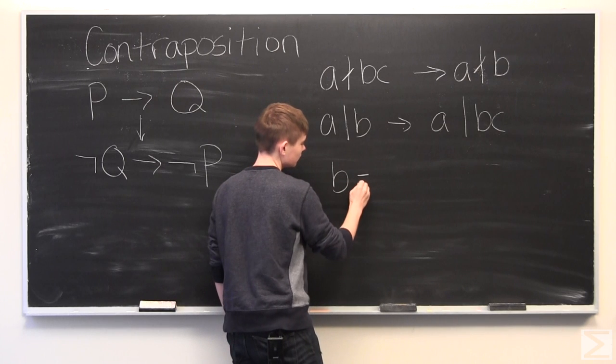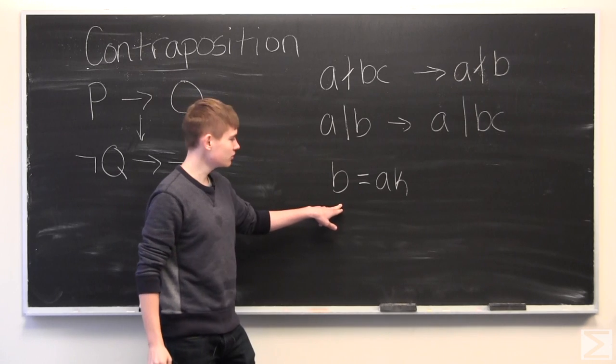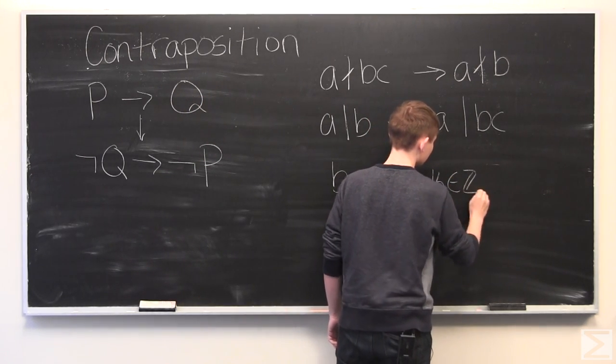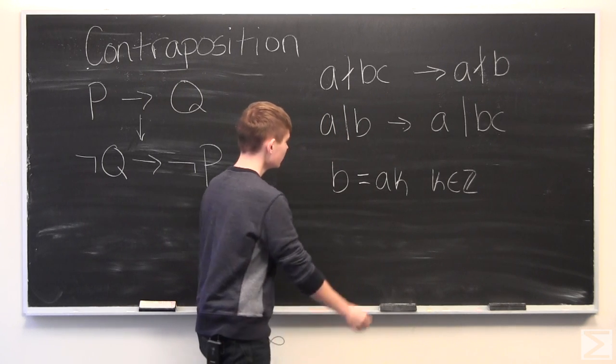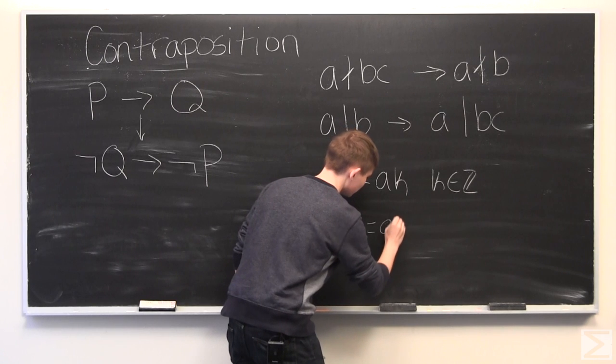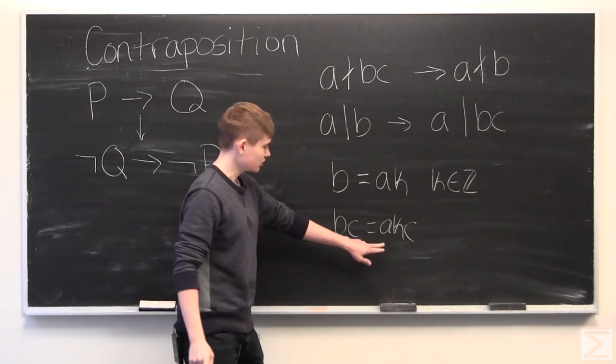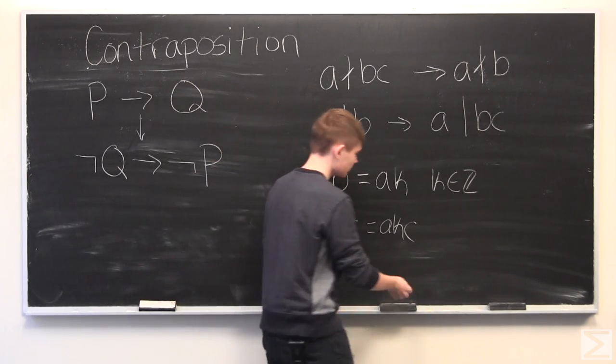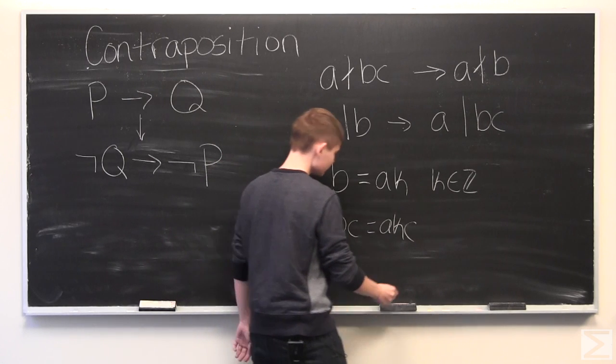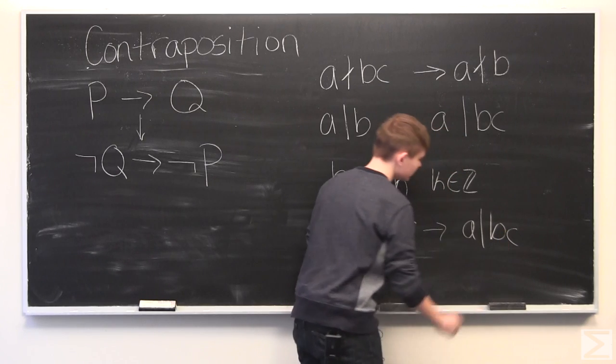A divides B implies that B is some multiple of A. So, B equals A times K, where K is just some integer. Therefore, B times C is equal to A times K times C, which is obviously a multiple of A, since K times C is just an integer. And, therefore, we have shown that A divides BC.